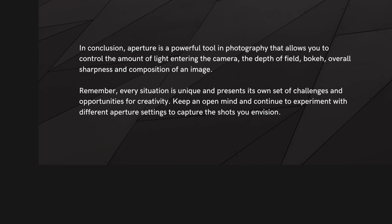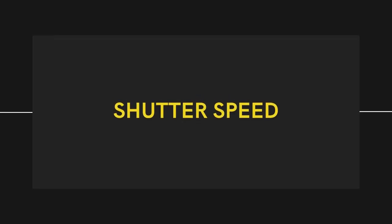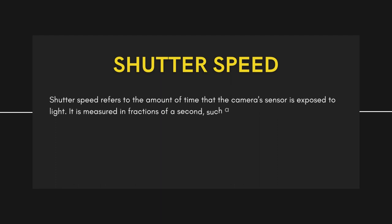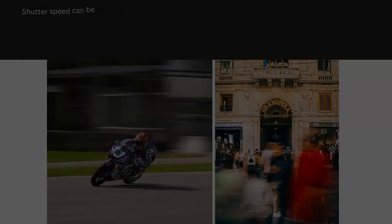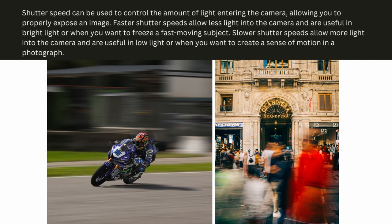Now let's shift our focus to shutter speed. Shutter speed refers to the amount of time that the camera's sensor is exposed to light, measured in fractions of a second such as 1/60th, 1/125th, or 1/1000th of a second. Shutter speed controls the amount of light entering the camera. Faster shutter speeds allow less light into the camera and are useful in bright light or when you want to freeze a fast-moving subject. Slower shutter speeds allow more light into the camera and are useful in low light or when you want to create a sense of motion in a photograph.